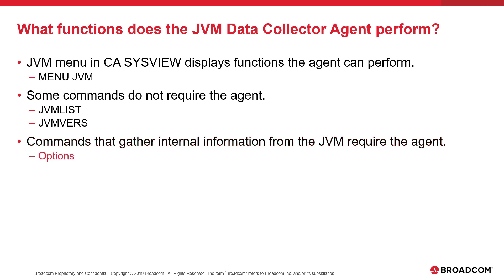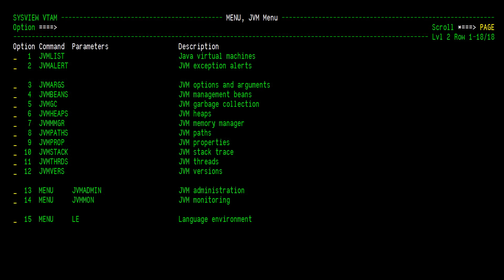Detailed information from the JVM might include JVM options and arguments passed to the JVM when it started, information on JVM Management Beans in use, information on JVM heap usage, or information on the JVM Memory Manager — and the list goes on. Here is the CA SysView menu JVM command, which displays all of the JVM commands included with the JVM component of SysView.